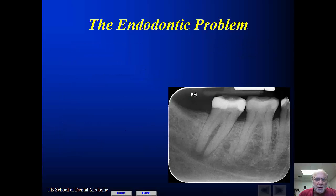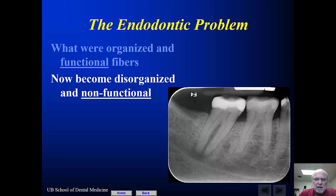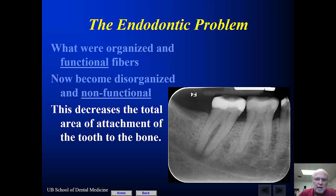The endodontic problem is that the periodontal ligament fibers, which were once organized and functional, become disorganized and non-functional. This decreases the total area of attachment of the tooth to the bone, and the tooth can become mobile — but it can be retained.